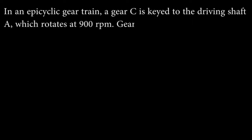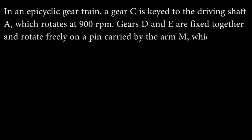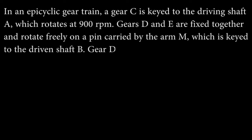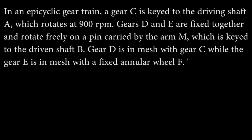In an epicyclic gear train, a gear C is keyed to the driving shaft A which rotates at 900 rpm. Gears D and E are fixed together and rotate freely on a pin carried by the arm M, which is keyed to the driven shaft B. Gear D is in mesh with gear C while gear E is in mesh with the fixed annular wheel F.